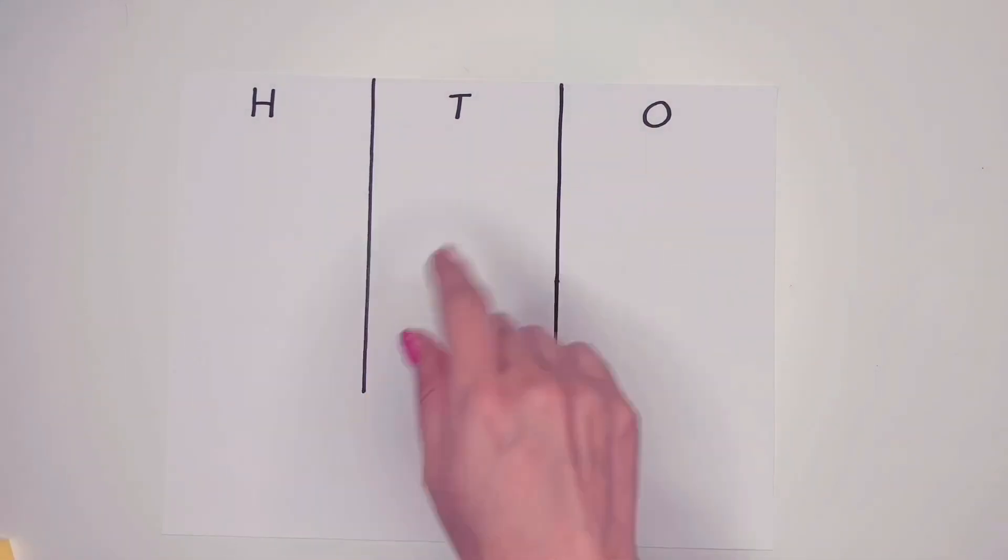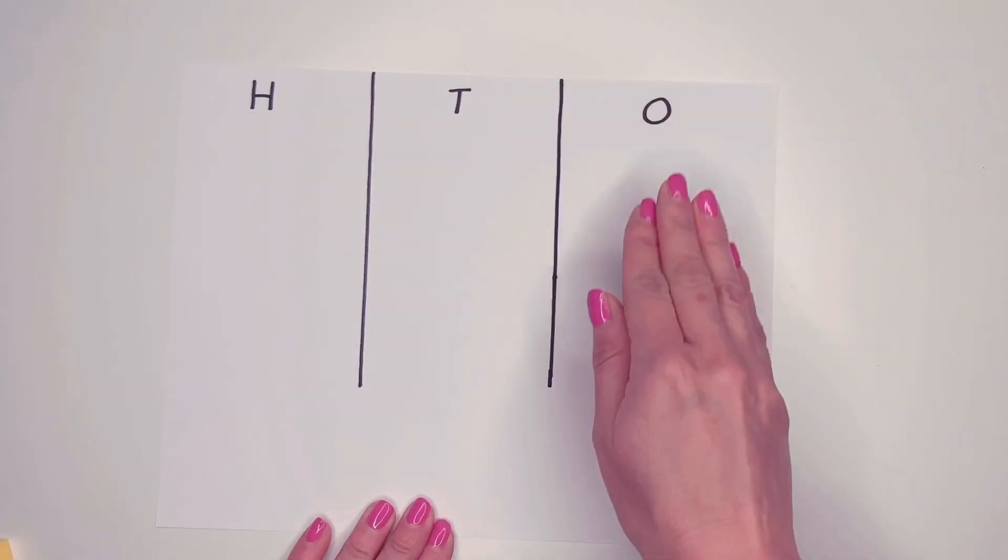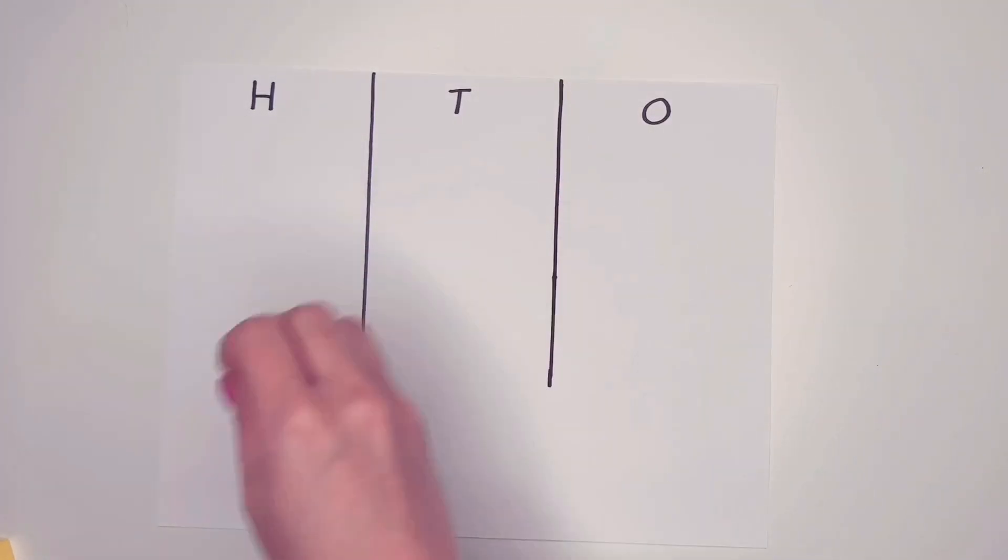So we're gonna start with our simple HTO chart - hundreds, tens, and ones. And remember in these place values if you have nine or less you can let it rest. If you have nine or more you need to go next door and regroup.